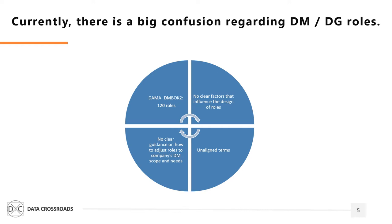Take for example the Data Management Body of Knowledge by DAMA International, the best known industry reference guide. They provide a rather complex system of data management and data governance roles. I once made an attempt to count the number of roles they referred to in the last DAMA publication. Often when I deliver a workshop, I ask participants how many roles they think DAMA refers to. The average answer people give is 20 or 30. In reality, there are 120.